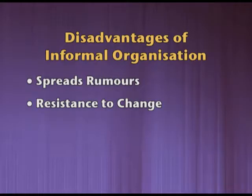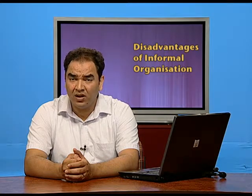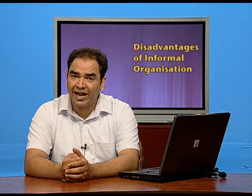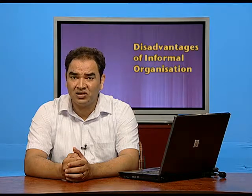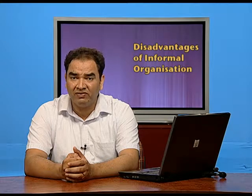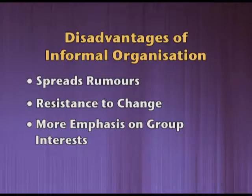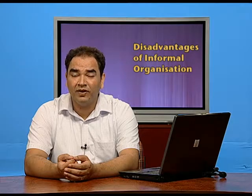The third disadvantage is more emphasis on group interests. Informal groups formed within the formal organization become powerful. If something happens that is not in favor of the group, they won't let it happen — they will go for a strike, threatening management, which may hamper the production system and adversely affect organizational goals. The fourth demerit is non-systematic working. In informal organization, no one is superior or subordinate, no one can take orders from anyone, so there is no system of doing work, which is another demerit of informal organizational structure.